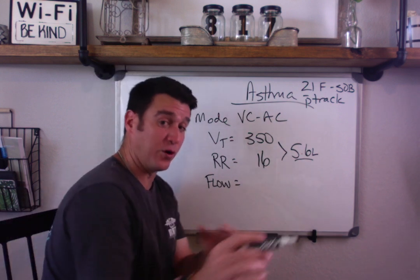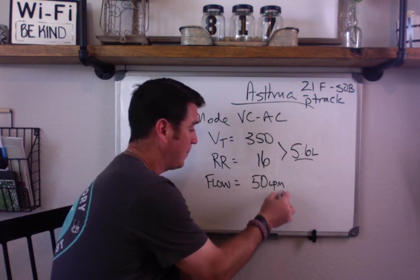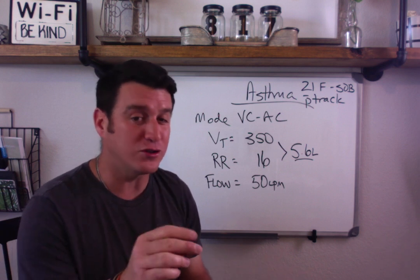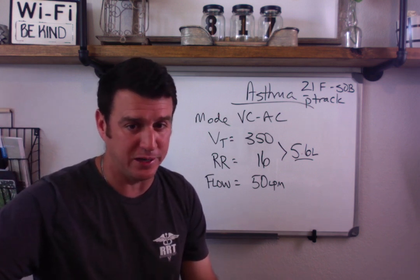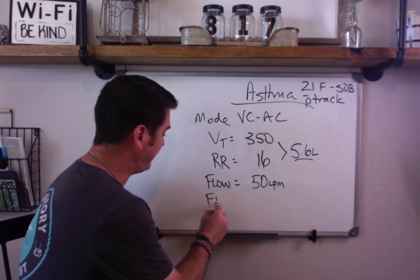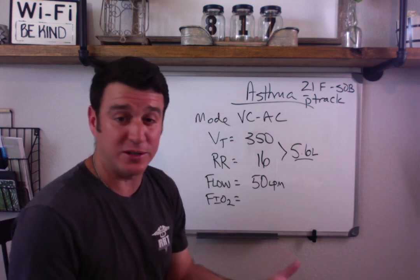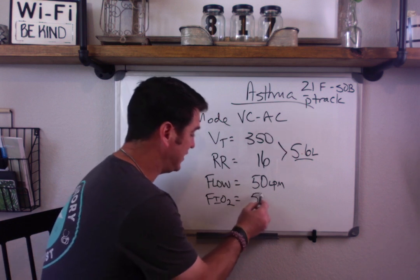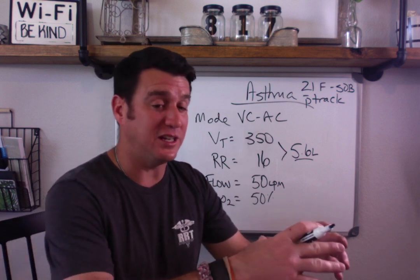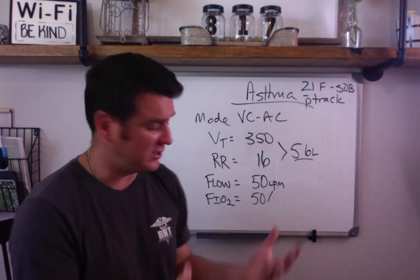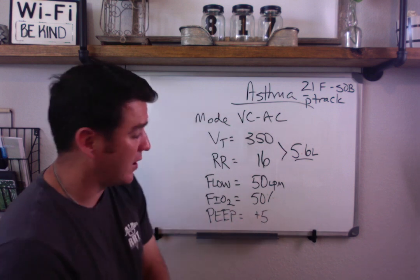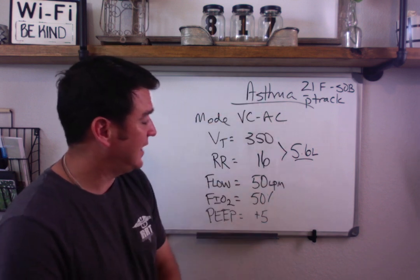We also set a flow — normal range is 40 to 60 liters per minute, so let's go 50 LPM for this scenario. For obstructive patients, flow can go up to 70 LPM. FiO2 we'll set at 50% — the patient was on a 50% Venturi mask before intubation. And we set a PEEP of 5 cmH2O. Those are our initial vent settings.